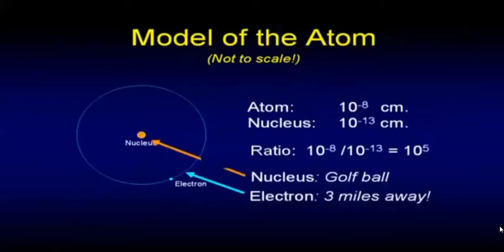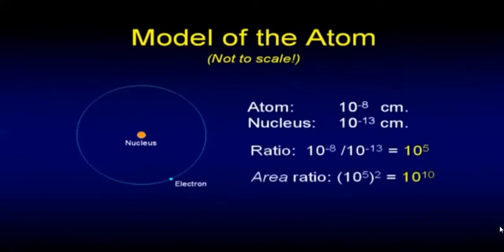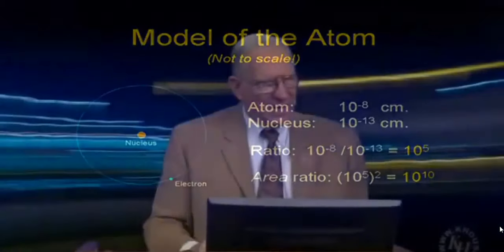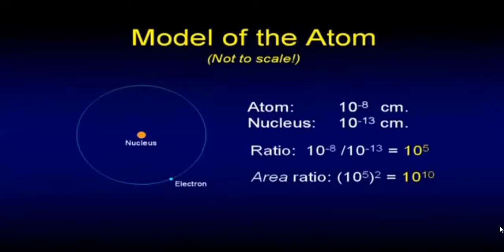That doesn't talk about the area that it encodes. What do I do to get the area? I square it. So the area ratio then would be 10 to the fifth times 10 to the fifth, or 10 to the fifth squared, or 10 to the tenth. Except the molecule isn't planar, it's three-dimensional. So we have to have the volumetric ratio. It would be 10 to the fifth cubed, or 10 to the fifteenth.